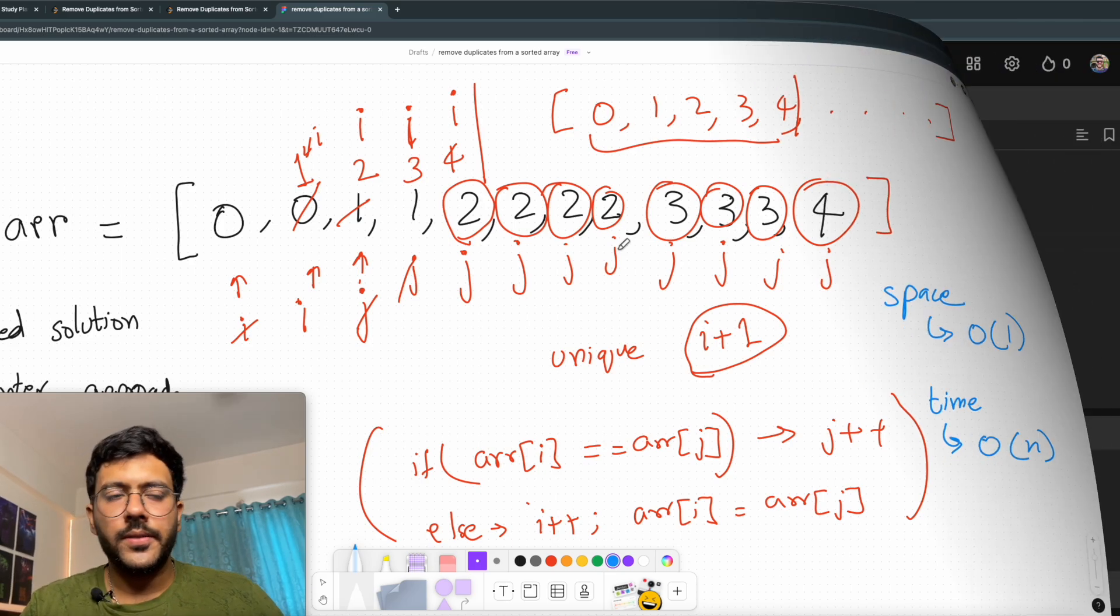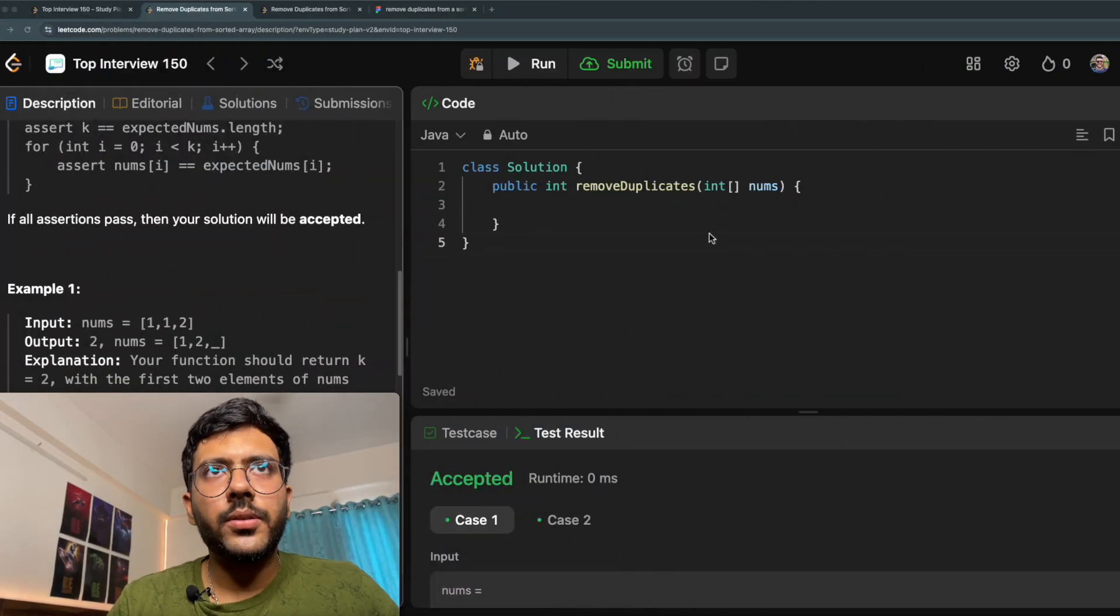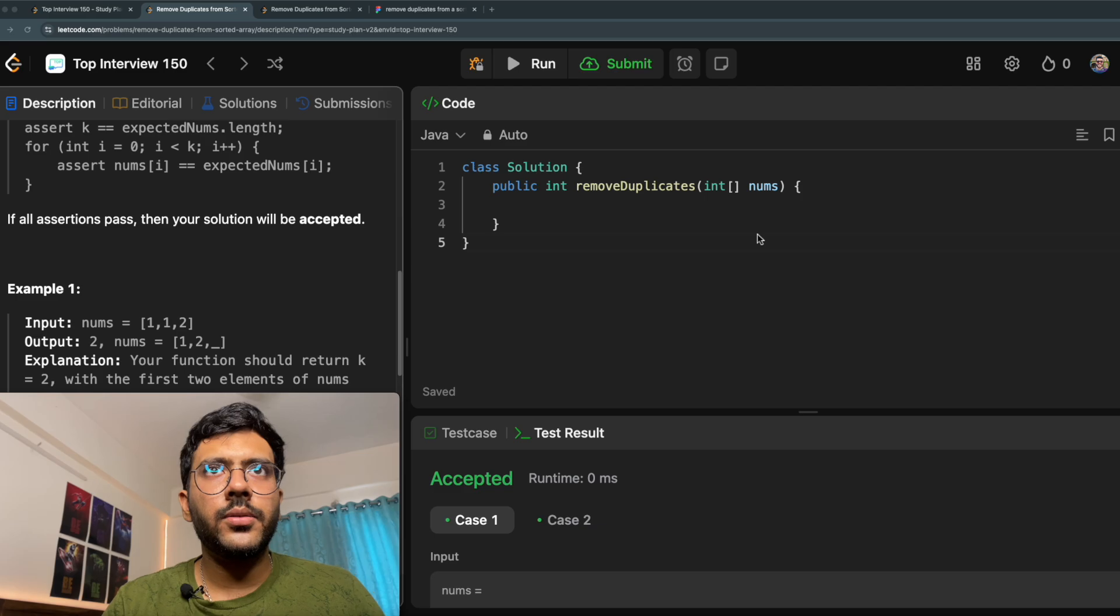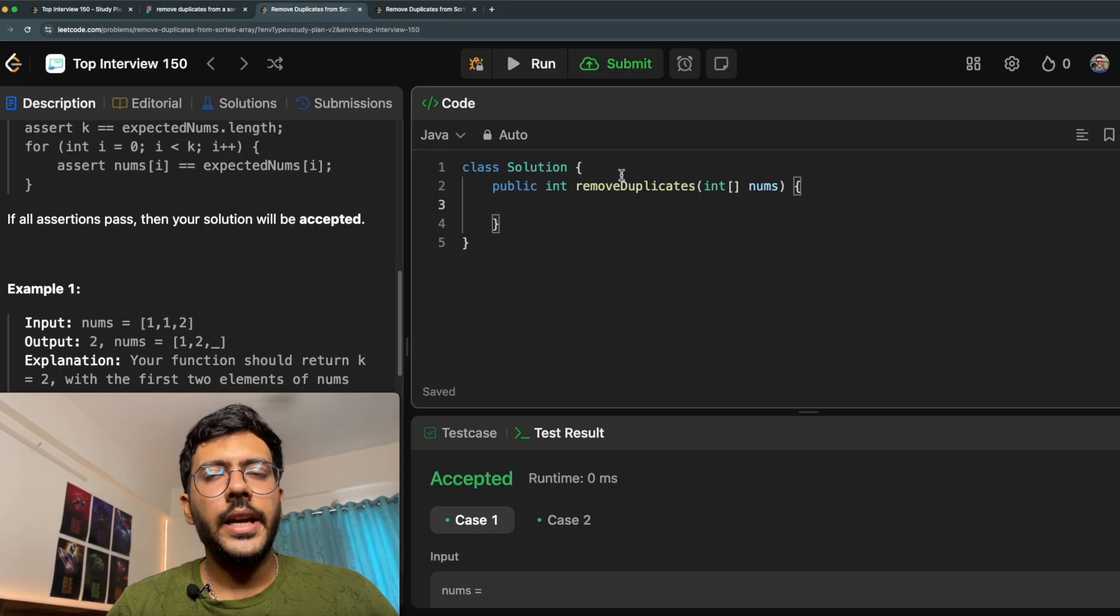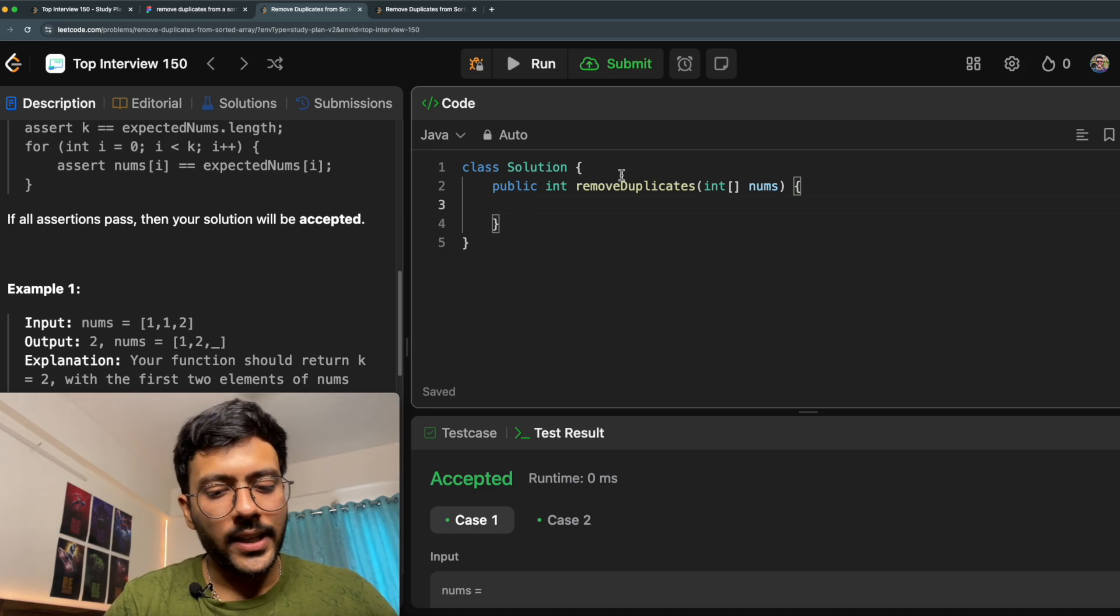Now let's code for it. Now this is a problem in LeetCode, so I will use their editor to code for this. Now in this approach, we had used two pointers i and j. I will name my pointers exactly the same.